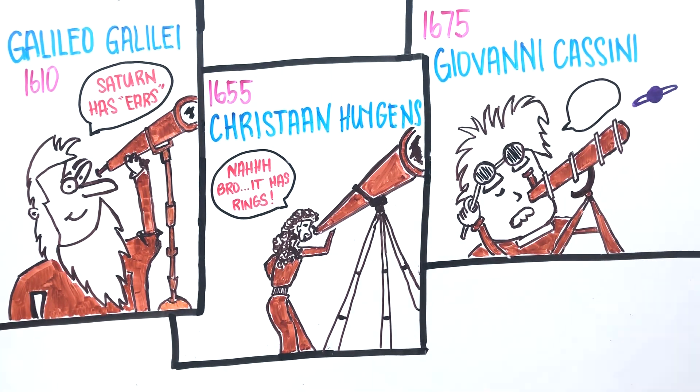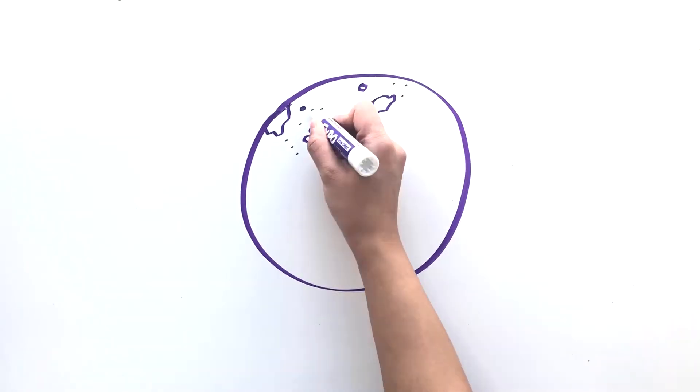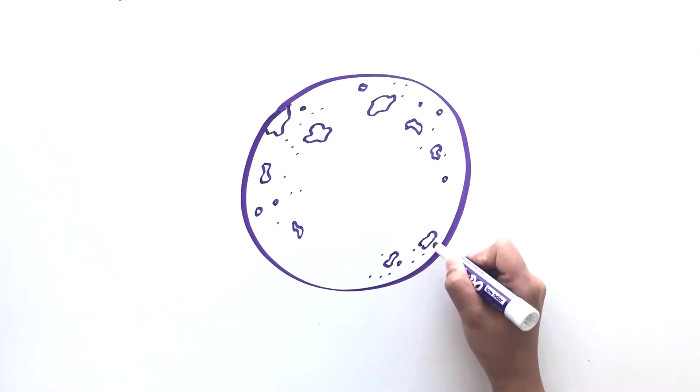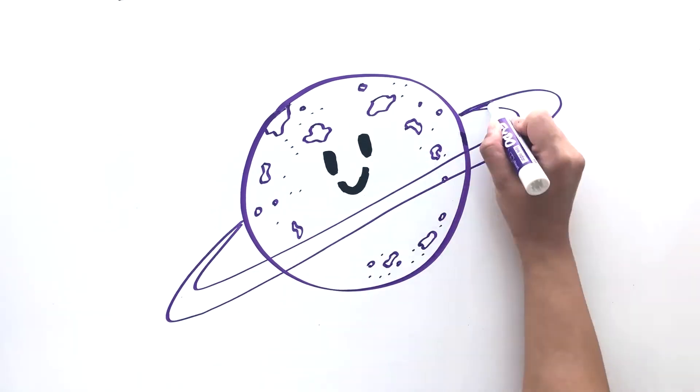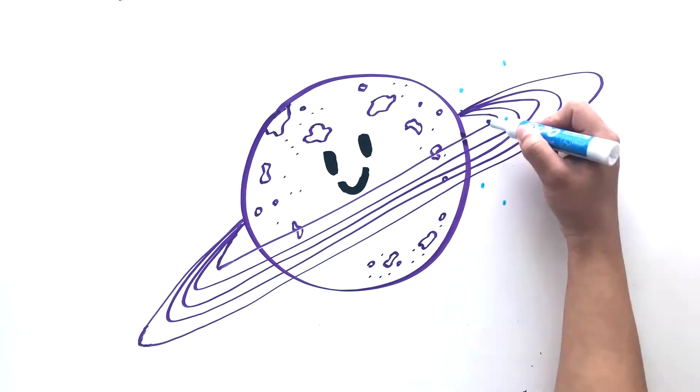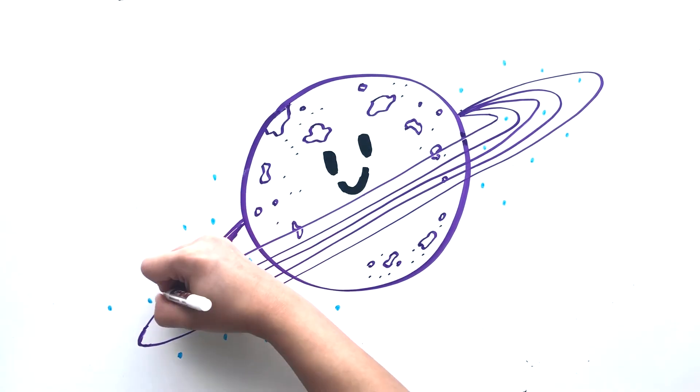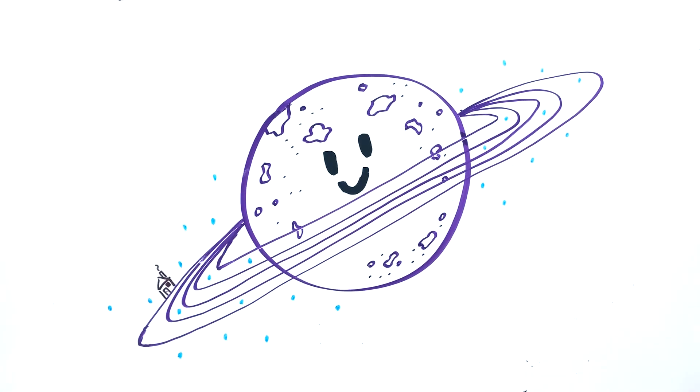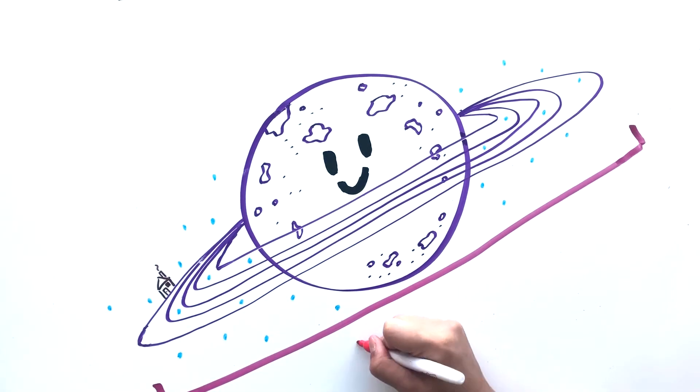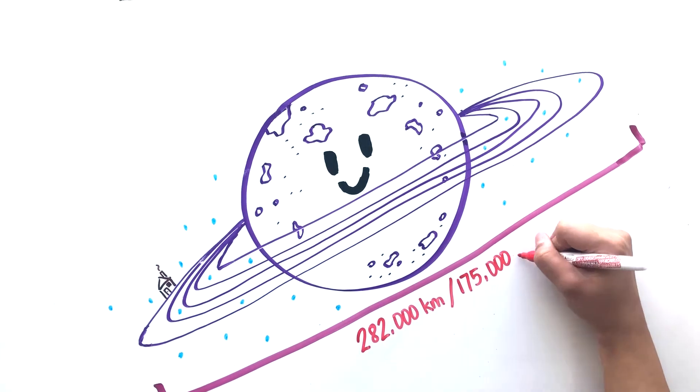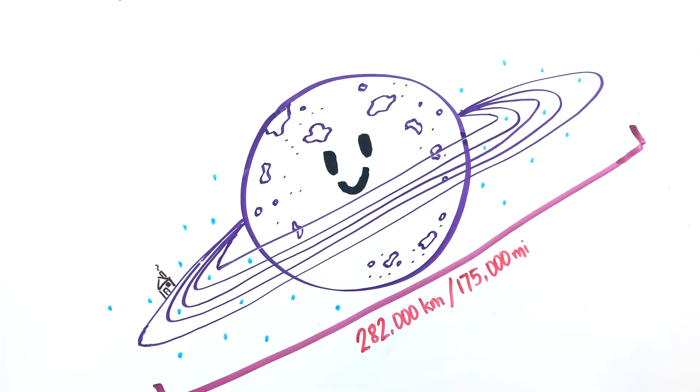These gaps are free of any ring particles and to this day it is called the Cassini division. The rings are so bright because they're mostly made of chunks of ice and small amounts of carbonaceous dust. Some are as small as grains of sand and as big as a large house.